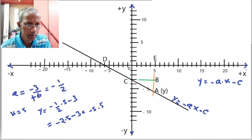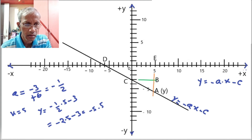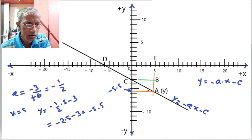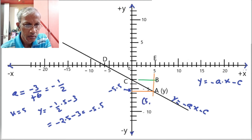We will check in the graph whether the value of minus 5.5 is correct. If we extend the line from A to the y-axis, it reads minus 5.5, so the equation is correct. We can write the coordinates of this point as x equals 5 and y equals minus 5.5, written as (5, minus 5.5).